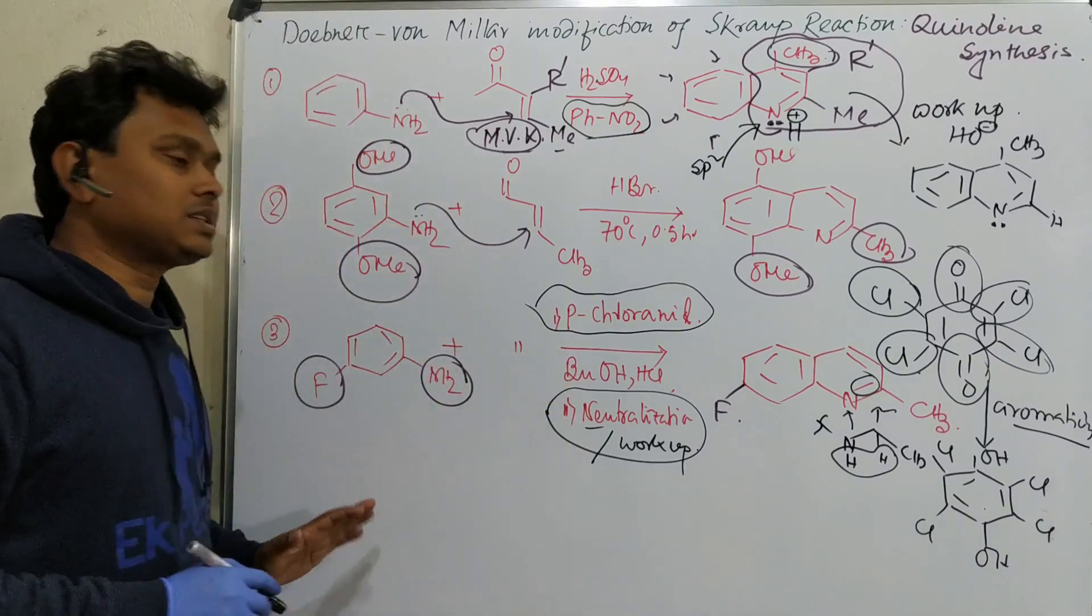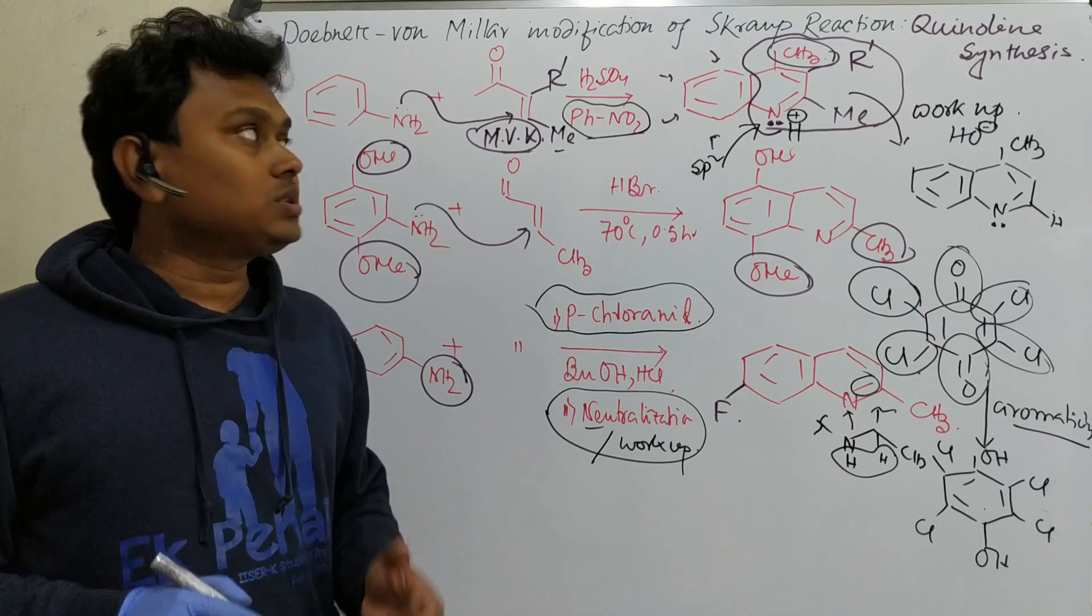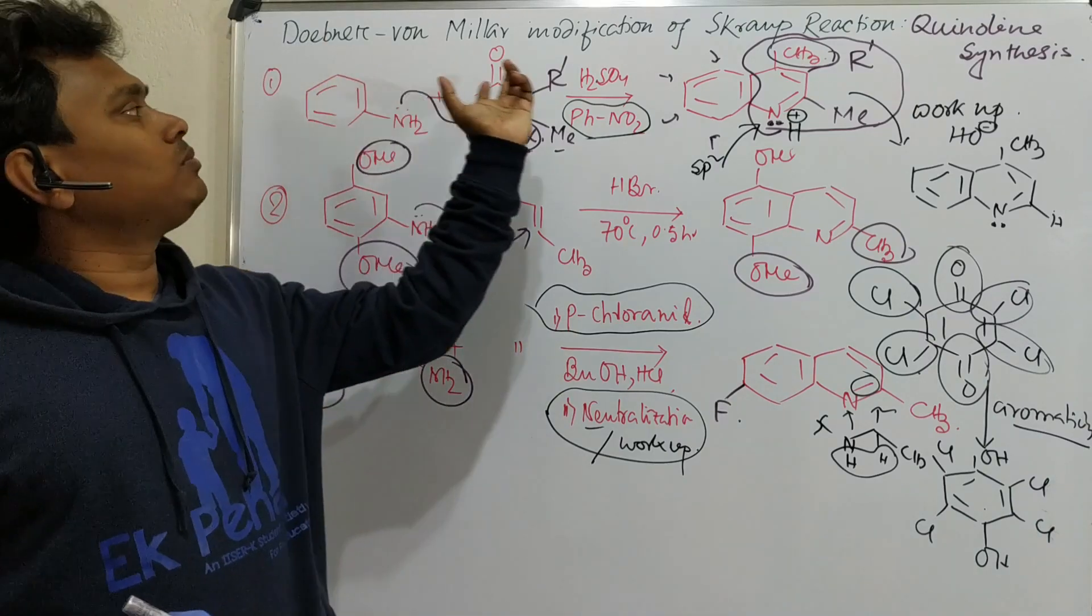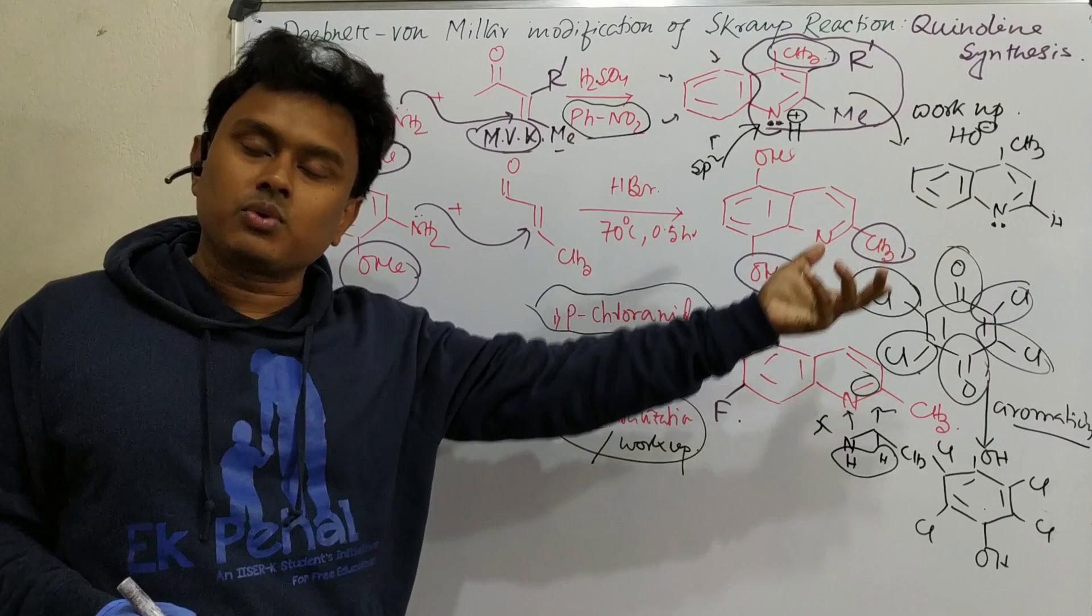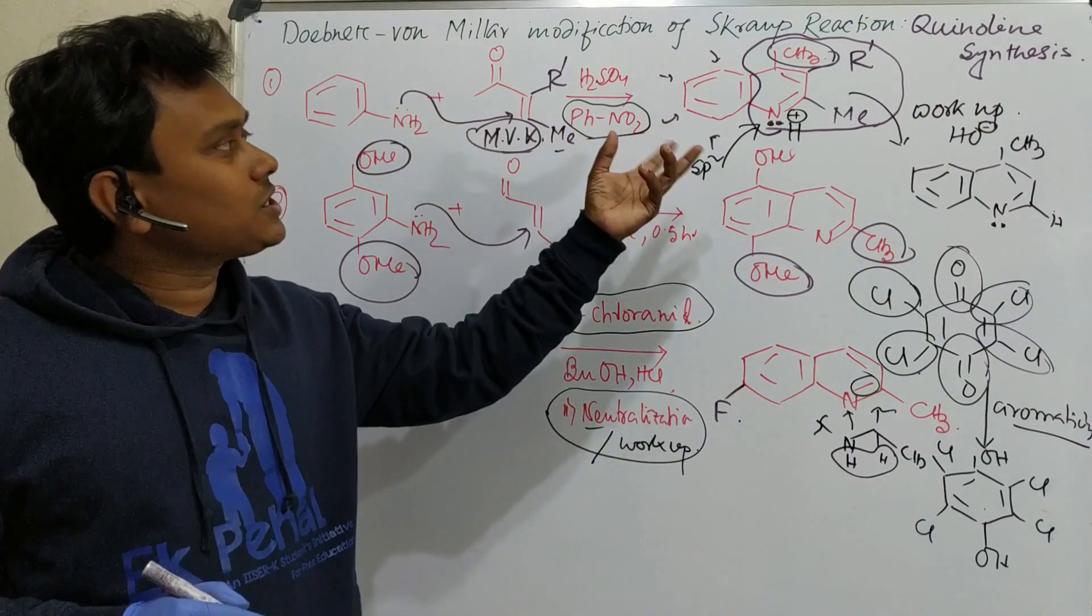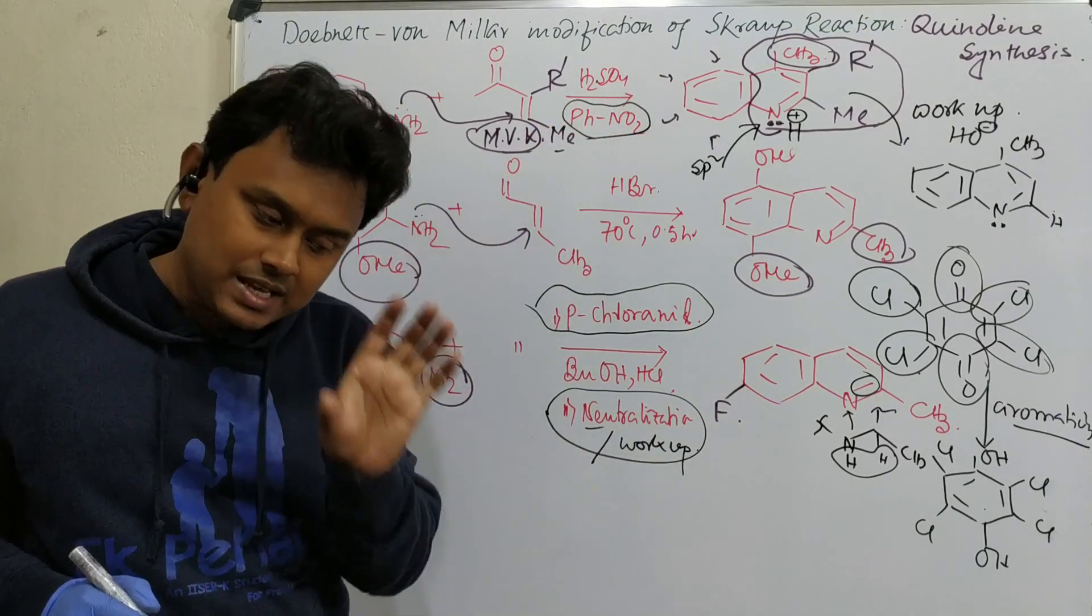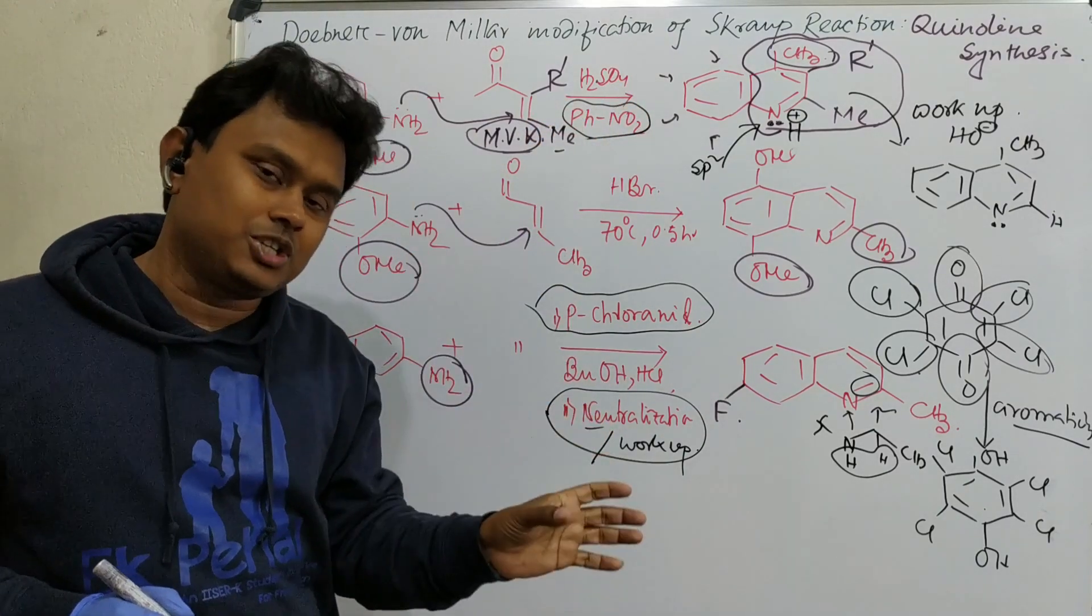So what we have learned today? We have learned today about the Doebner Von Miller modification of Skraup reaction for quinoline synthesis. This is a modification because the original reaction was for simple quinoline synthesis, not the substituted derivative.